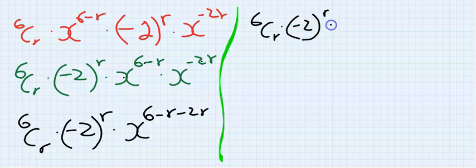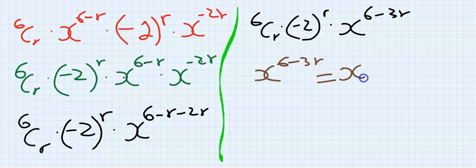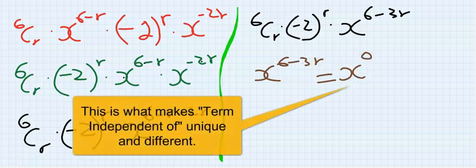Step 2: The term independent of x. x to the power of 6 minus 3r is equal to x to the power of 0. This is the difference between what we have been doing before.